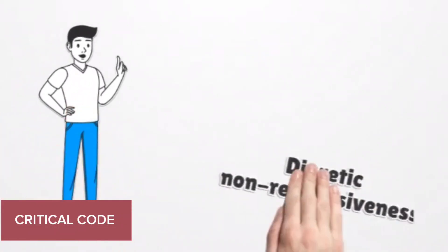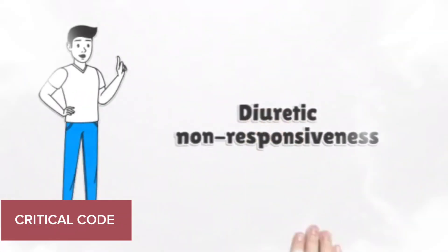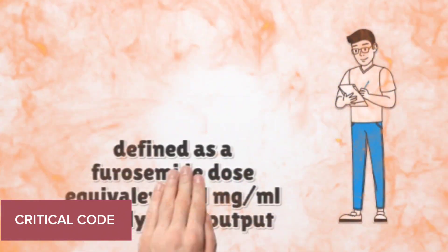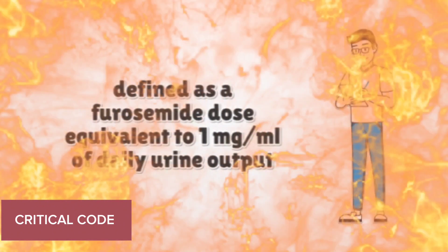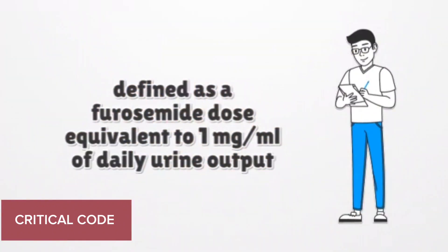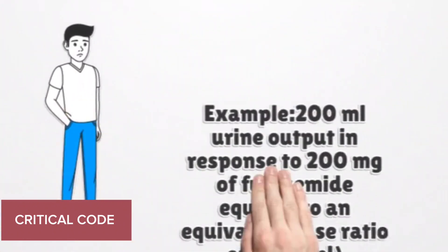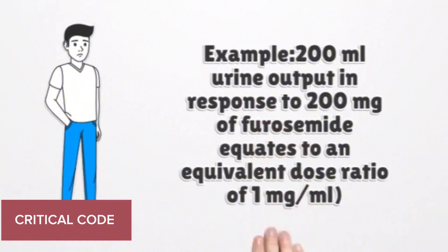Diuretic non-responsiveness is defined as a furosemide dose equivalent to 1 mg per milliliter of daily urine output. For example, 200 milliliters of urine output in response to 200 mg furosemide equates to an equivalent dose ratio of 1 mg per milliliter.